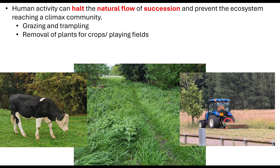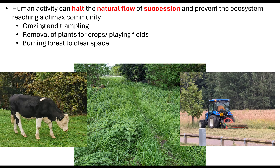Another way is the removal of plants — for example, if we want to grow crops in a field, we remove any plant species we're not interested in. It may also be that we want playing fields for football or rugby teams, requiring us to halt the natural flow of succession by cutting plants back down to grass level to maintain a usable playing field. Another way is through burning a forest to clear a space — I will cover deforestation and timber production for sustainability in a separate video, so do check that out.